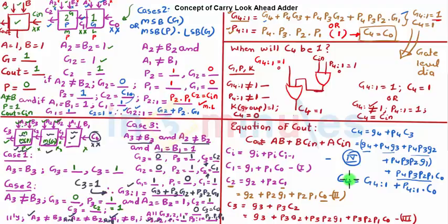Exactly the same thing I have drawn here. So my C4 is equal to 1 if my G4:1 is 1, or an OR gate, and an AND gate which has input P4:1 and C0. In this case, Cin is equal to C0. This is the concept of carry look-ahead adder.